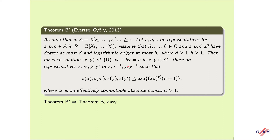The quantitative version of Theorem B: Assume that in A the transcendence degree r is at least 1, otherwise it is trivial. Let A-tilde and so on be representatives for A, B, C in R. Assume that F₁,...,F_t and the representatives all have degree at most D and logarithmic height at most H. Then for each solution X, Y of this unit equation, there are representatives X-tilde, (X-1)-tilde of X and X-1 such that the size satisfies a certain inequality, where C₁ is an effectively computable absolute constant. It should be mentioned that there are double exponentials here; Aschenbrenner's theorem is responsible for this. Using Baker's method alone, only one exponential would be needed.